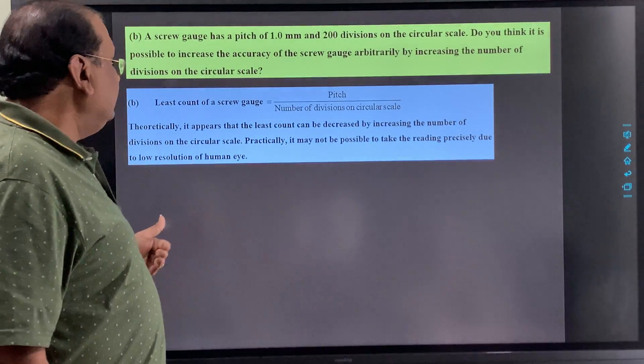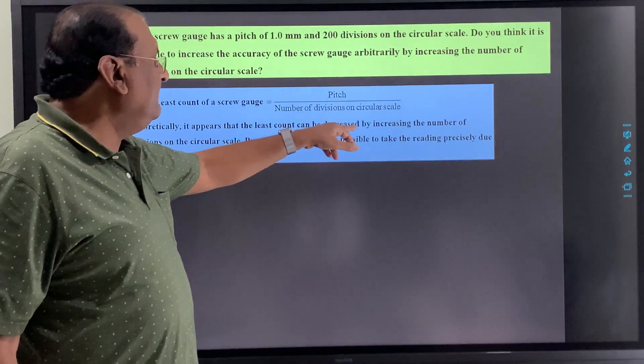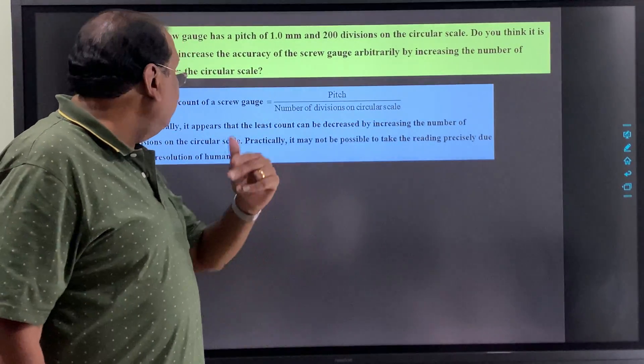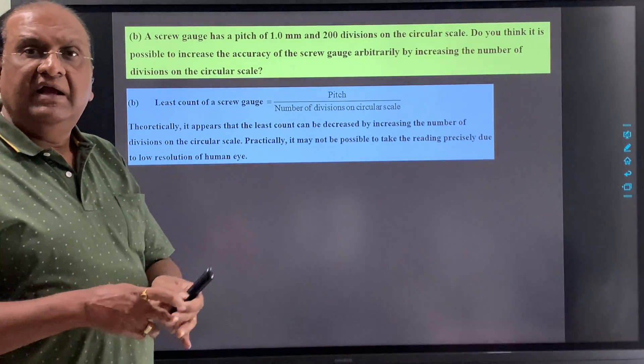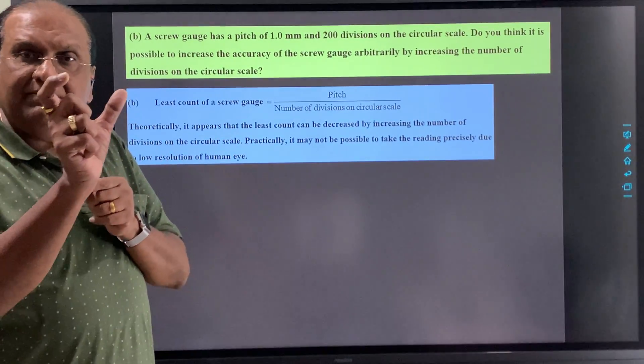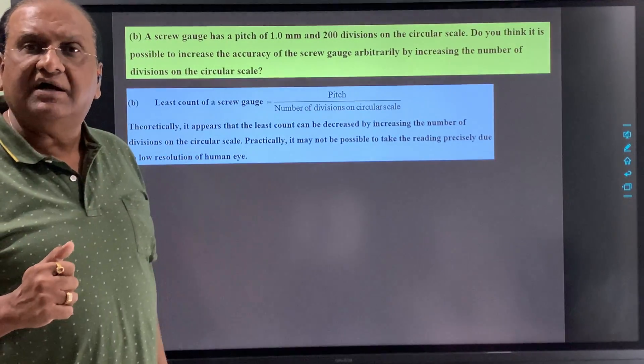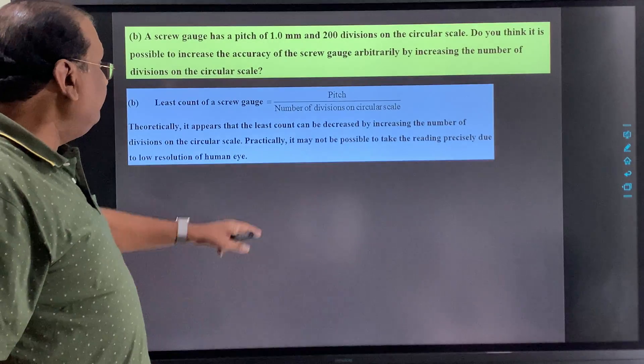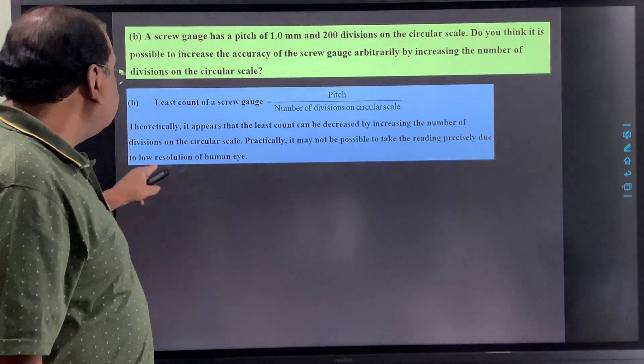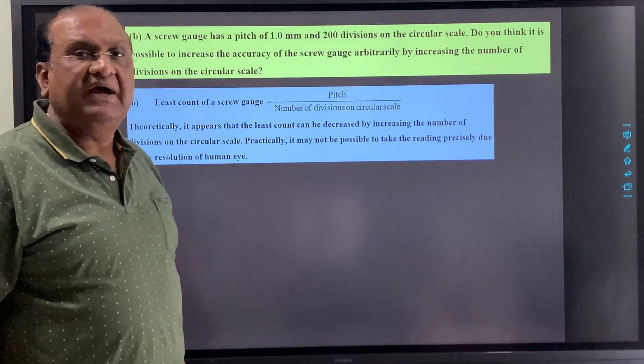But there is a problem here. Theoretically, it appears that the least count can be decreased by increasing the number of divisions on the circular scale. But it may not be possible to take the readings precisely due to low resolution of human eye.